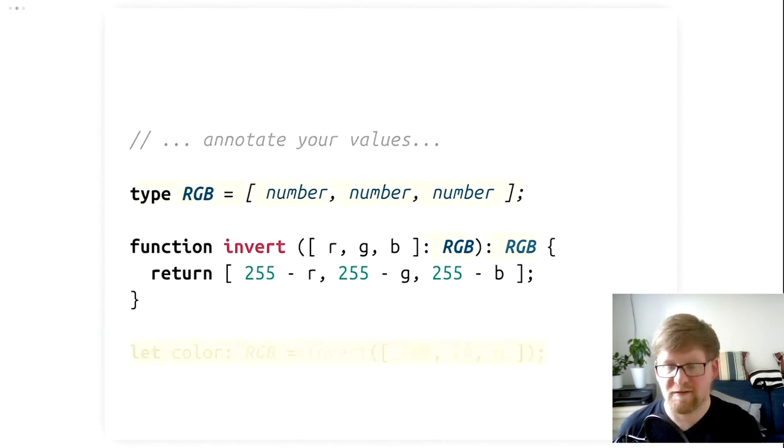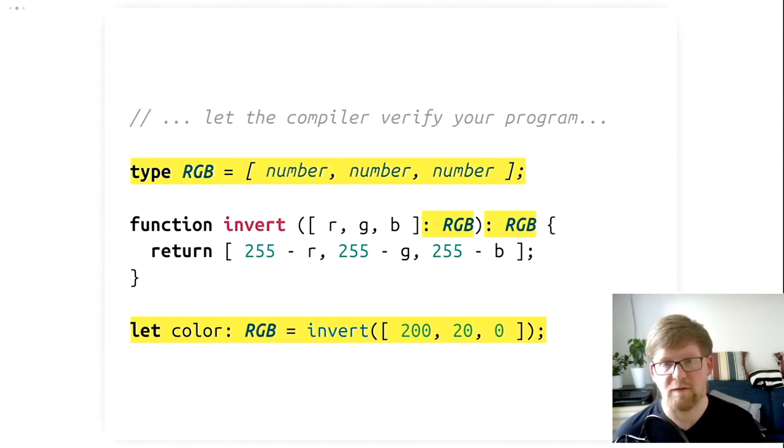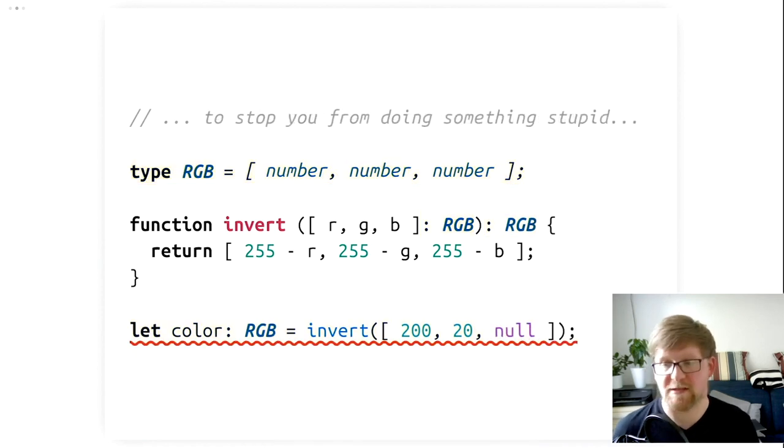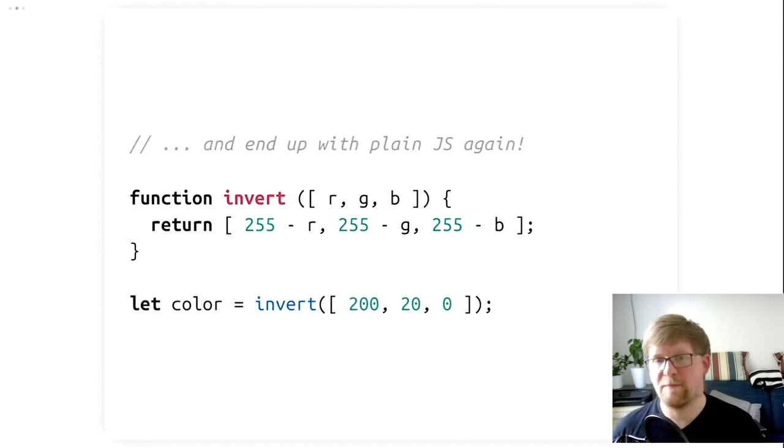If we then call this function and provide some input, the TypeScript compiler that takes TypeScript and turns it back into JavaScript can verify that the program makes sense. And indeed, in this case, it does make sense. If our program doesn't make sense, if for example, we replace the last number with null, which is not a number, so this program doesn't work, TypeScript will not turn this into JavaScript, but will instead complain with an error message. So TypeScript, once we've written a program that's valid, turns this back into JavaScript and we can actually run this in our browser.